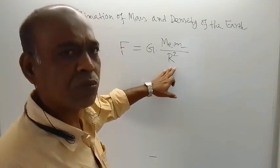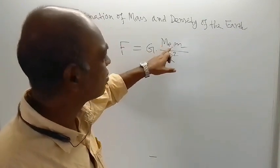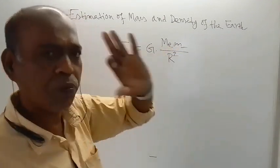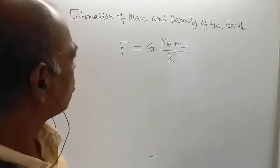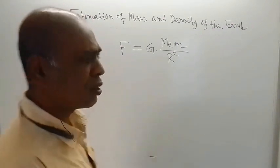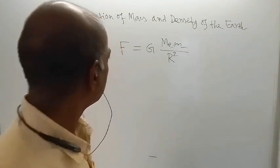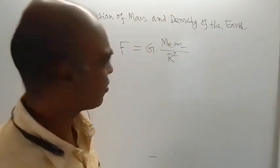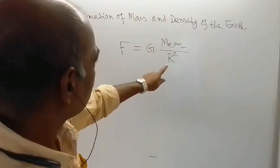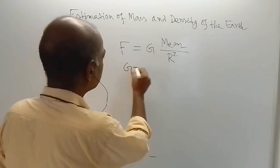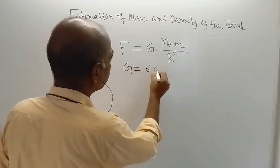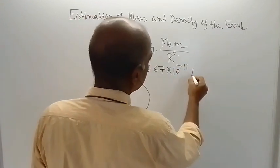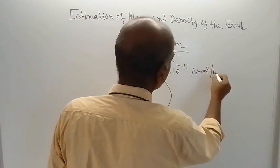R is the radius of the Earth. M is the mass of the Earth and m is the mass of the object. This is Newton's universal law of gravitation — the force of attraction between Earth and the object of mass m. The value of G is equal to 6.67 into 10 to the power minus 11 newton meter square per kg square.